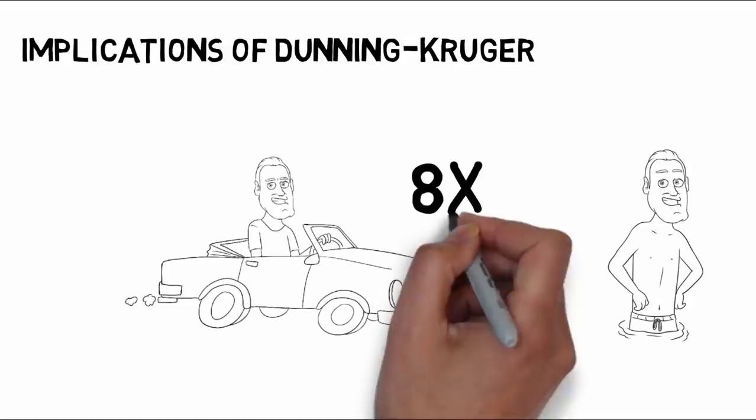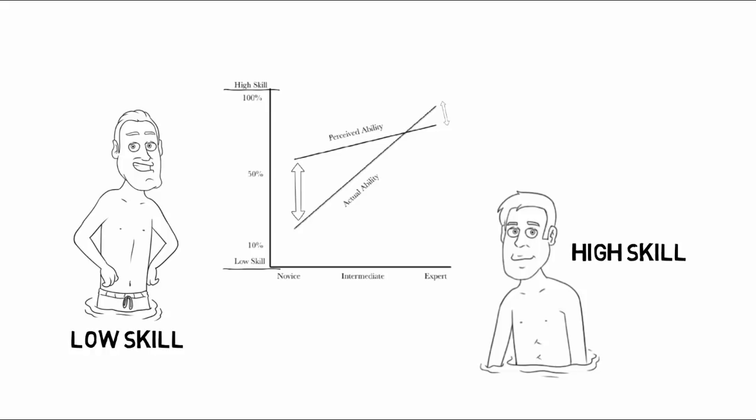The Dunning-Kruger effect does not only affect novices. There are also the high skill individuals or experts that slightly underestimate their ability. While consequences of this type of error are also generally low, there are still some implications to consider.